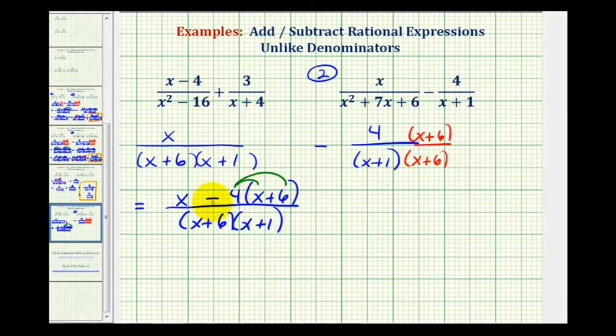So now we're going to clear the parentheses in the numerator and combine like terms. And because we have subtraction here, we can think of distributing a negative four.